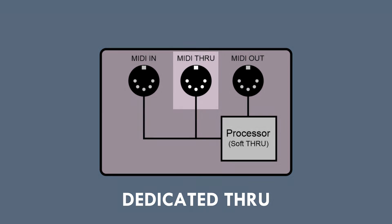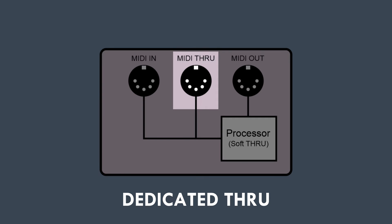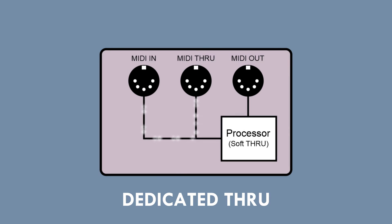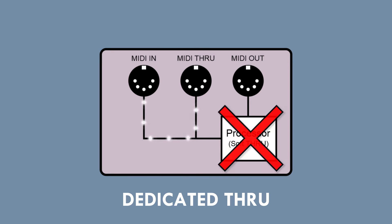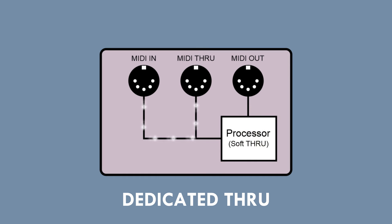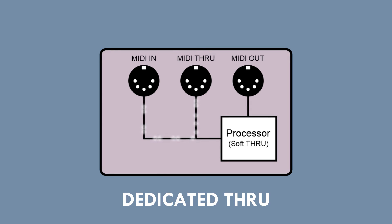The first type is a dedicated port labeled 'through' on the device. If the device has this port, it's there to repeat any messages that it receives on the in port and has no interaction with the device's microprocessor. It's just a basic electrical split of the signal with no software controls to configure — it works like any other splitter just by plugging in.